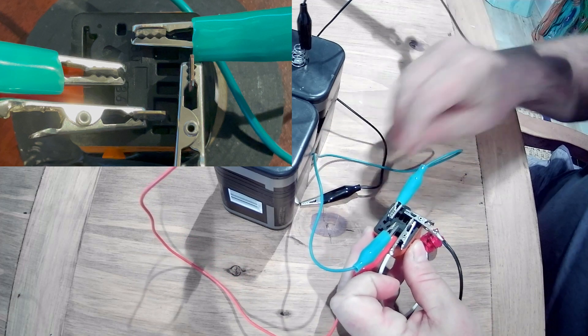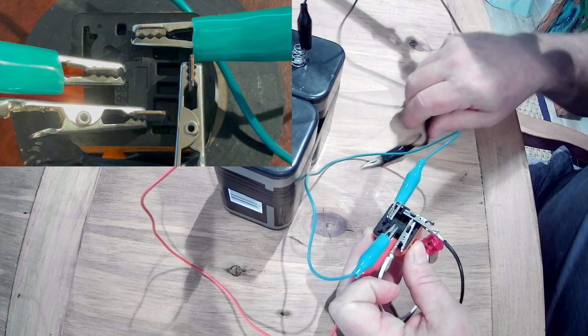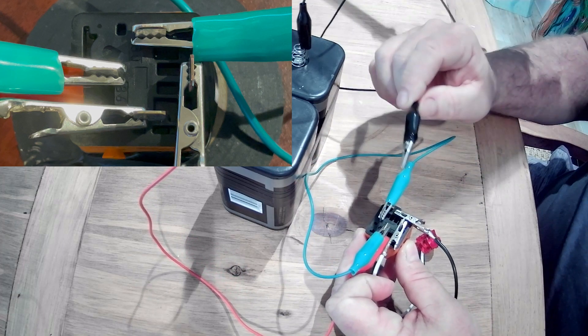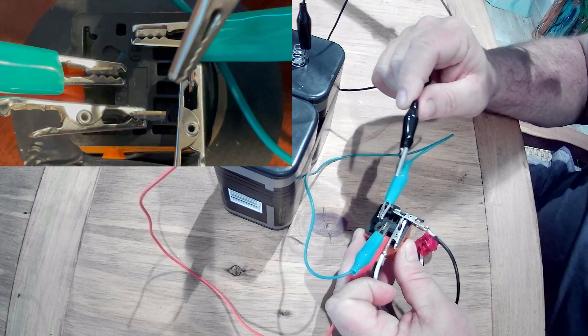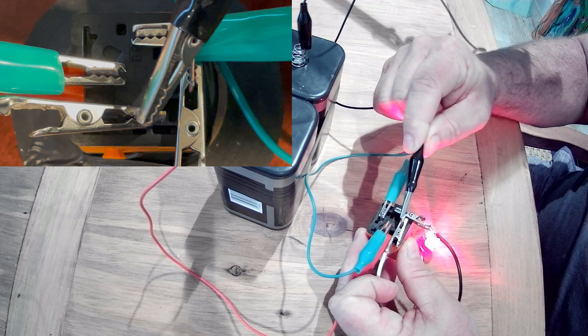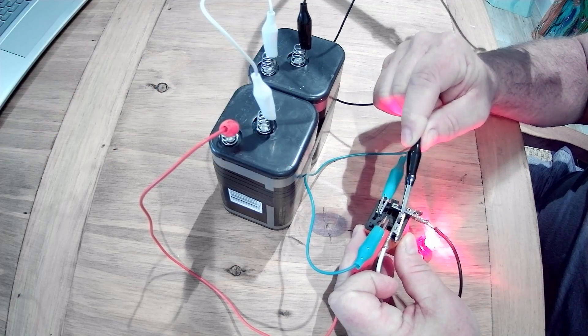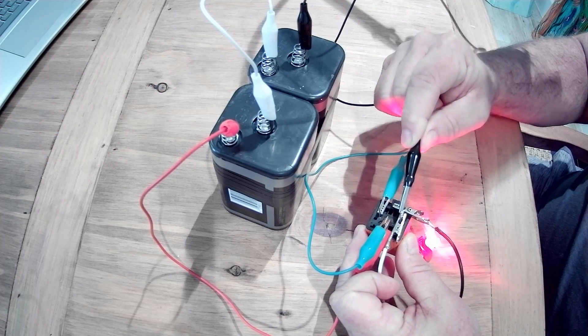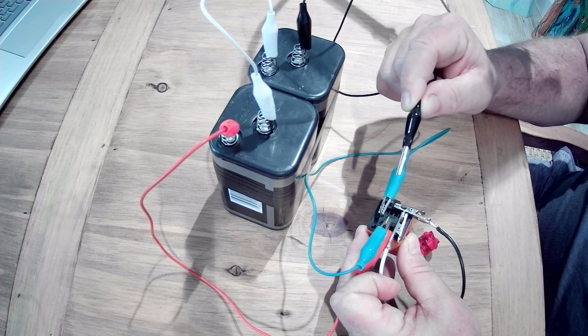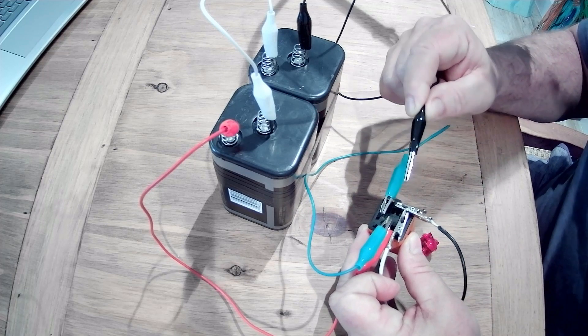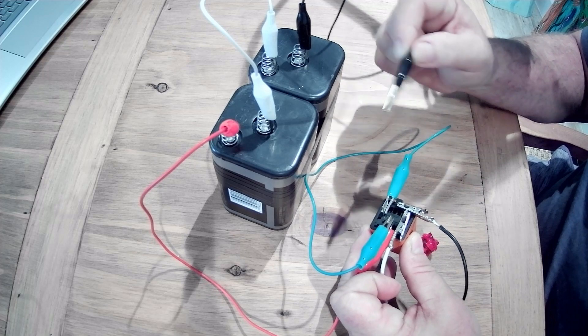So when we touch the negative from the battery to the negative terminal on the relay, we should hear the relay click and the light should illuminate, which means that the relay is working correctly. If the relay was not working correctly, we never would hear the relay click and the light wouldn't come on.